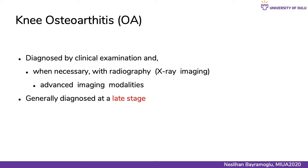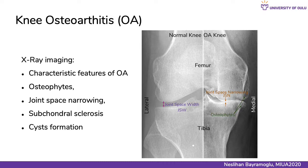Currently, OA is diagnosed by clinical examination and usually with x-ray imaging, and if needed, other advanced imaging modalities such as MRI scanning. But generally it is diagnosed at a late stage, therefore creating difficulties in disease management. Characteristic features of OA can be observed in x-ray imaging — for example, bone growth called osteophyte formation, and joint space narrowing which is the distance between femur and tibia. Sclerosis and cyst formation can also be observed in plain radiographs.